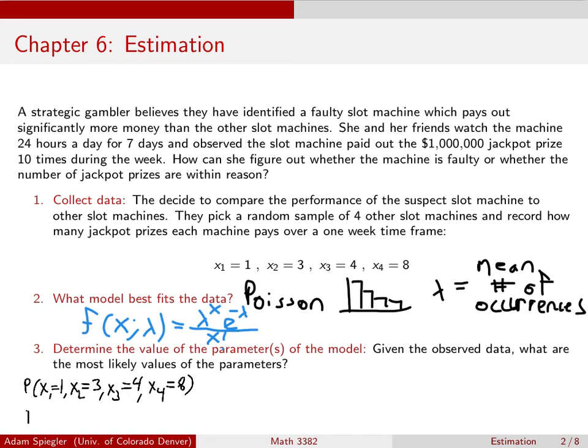Well, since these are independent events, this would be the same thing as saying, what's the probability that X1 is one, times the probability that X2 is three, times the probability that X3 is four, times the probability that X4 is eight. So we, again, assumed that each of these machines, each of these observations was independent of the other. So we could just multiply each of those values. So how would I find the probability that X1 is equal to one? Well, that's going to be what I get when I plug one into the PDF function.